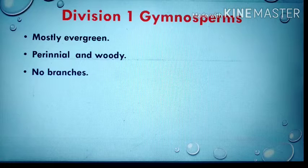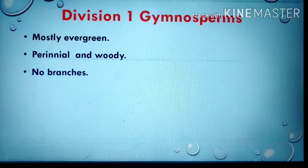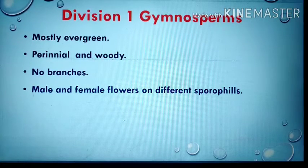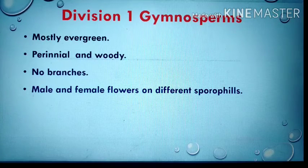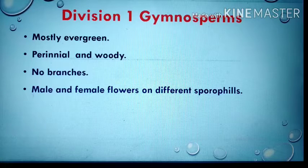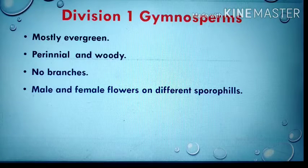There are no branches — the stem is not differentiated into branches. The leaves are formed directly on the stem and they form a crown. These plants bear male and female flowers on different leaves, which are called sporophylls.